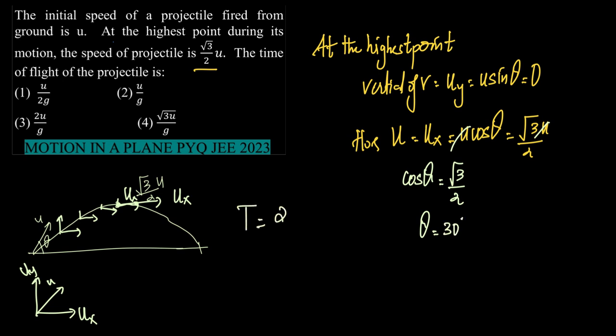Now, what is time of flight? Time of flight T is equal to 2U sin θ divided by g. And therefore, T is equal to 2 into U into sin θ. What is sin θ? Now, it is sin 30, the whole upon g.